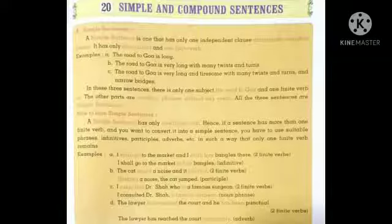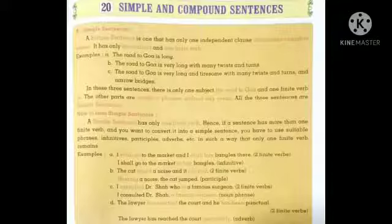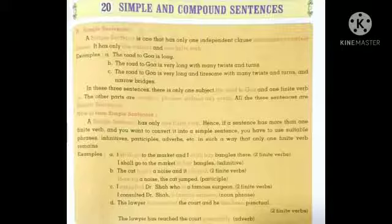A is simple sentences. A simple sentence is one that has only one independent clause and makes complete sense. It has only one subject and one finite verb. Now the simple sentence is one independent clause, one subject and one finite verb.